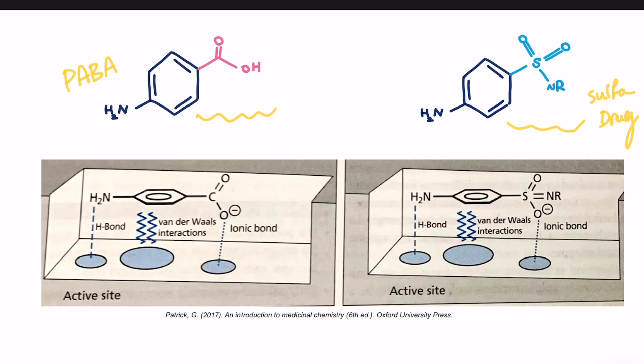So both of them bind through ionic bond. Both of them have van der Waals interaction with the enzyme, as well as hydrogen bond. Because sulfonamides have similar enough structure to PABA, the enzyme is fooled into accepting sulfonamide into its active site.